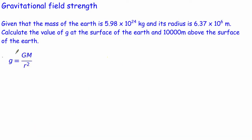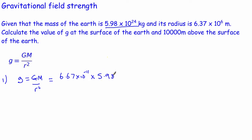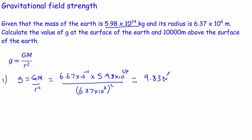Let's do a couple of examples. We're on the Earth, and we know the mass of the Earth and the radius of the Earth. We want to find the gravitational field strength at the surface of the Earth. We write our equation down, put our numbers in: g = (6.67 × 10⁻¹¹ × 5.98 × 10²⁴) divided by (6.37 × 10⁶)², and always remember to square it. If you do this, we get 9.83 newtons per kilogram.